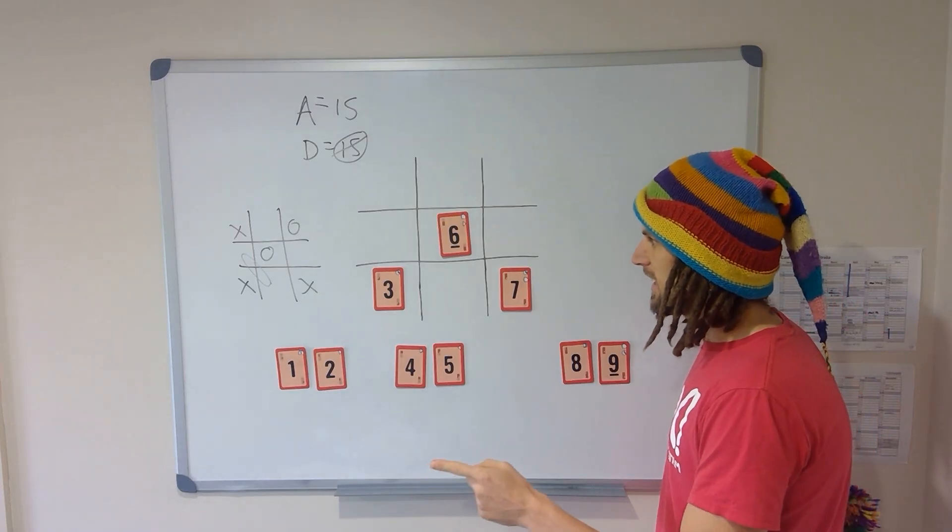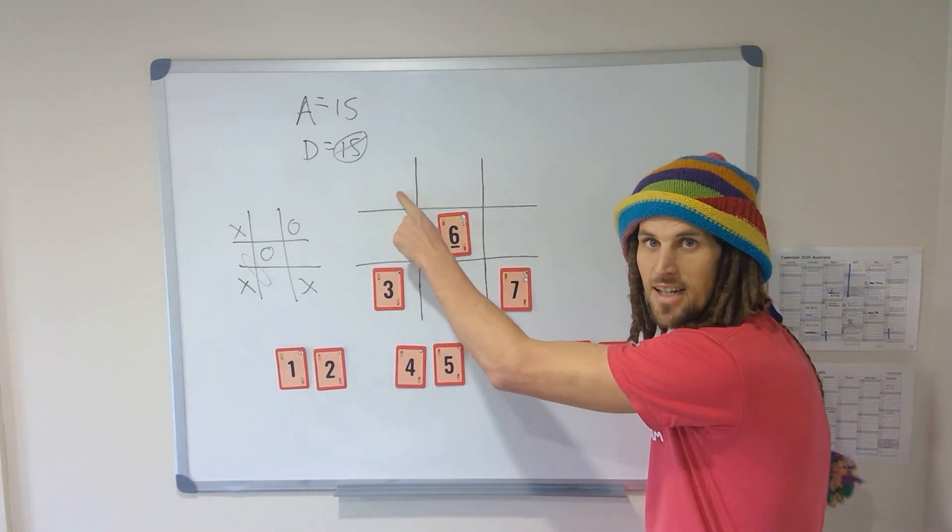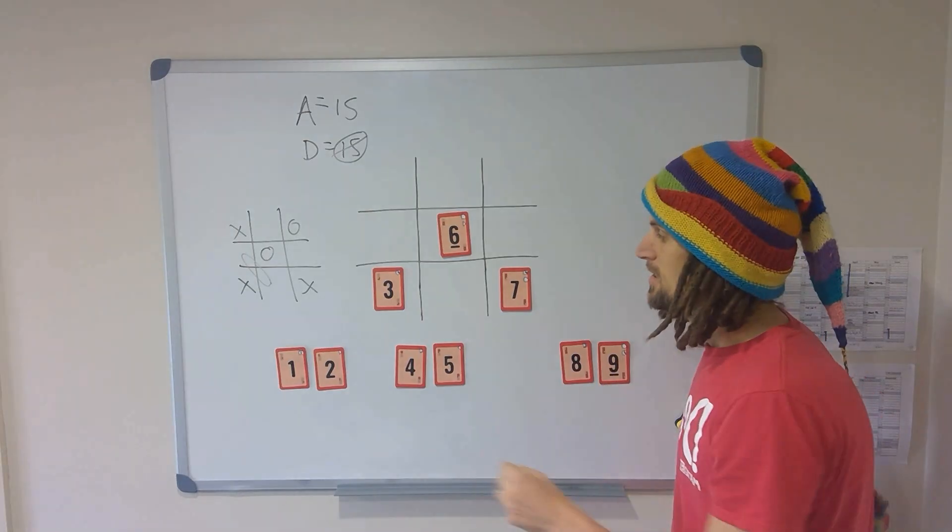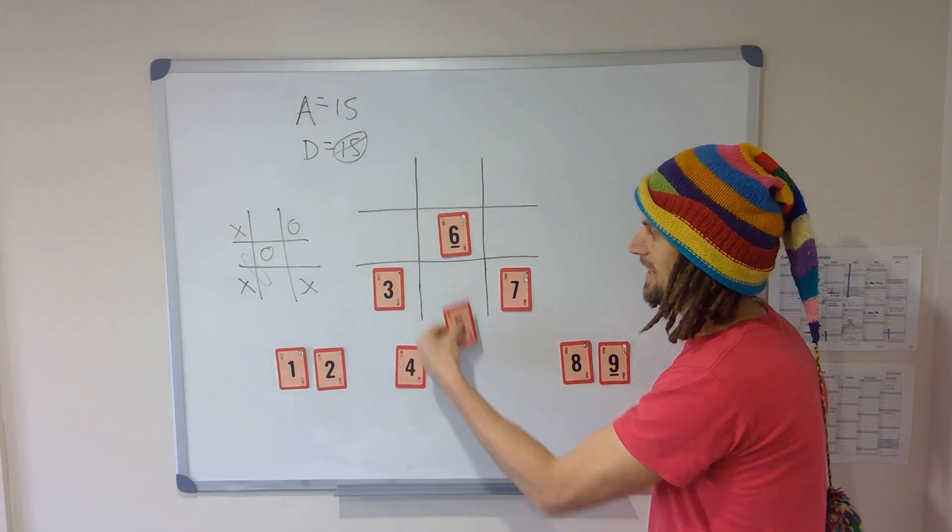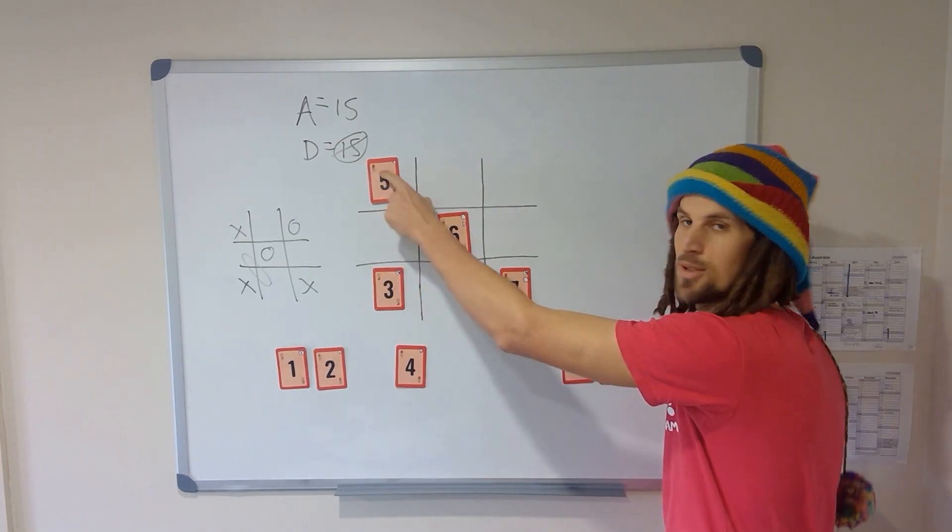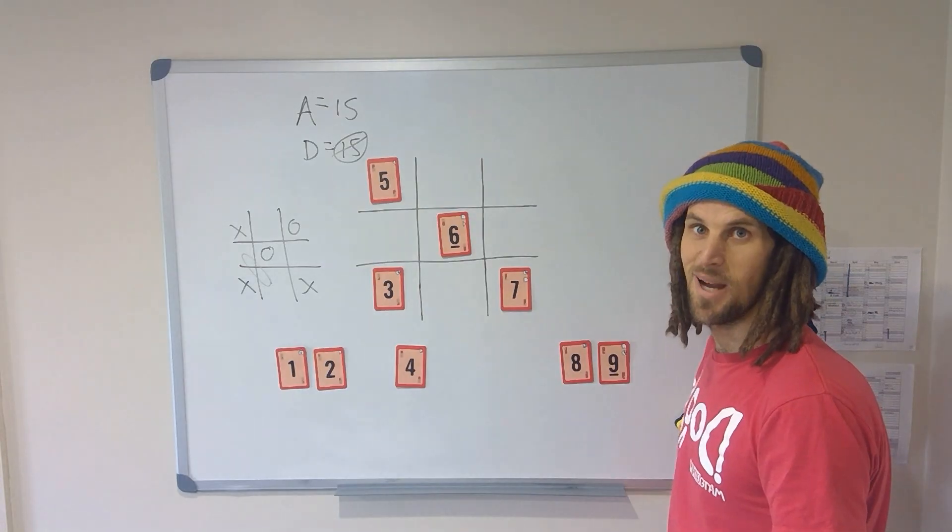So he needs either a five here or a two here to win, but with one move I can block that by placing the number he needs here, up here. So now can't put a two in there or a five in there. Not bad!